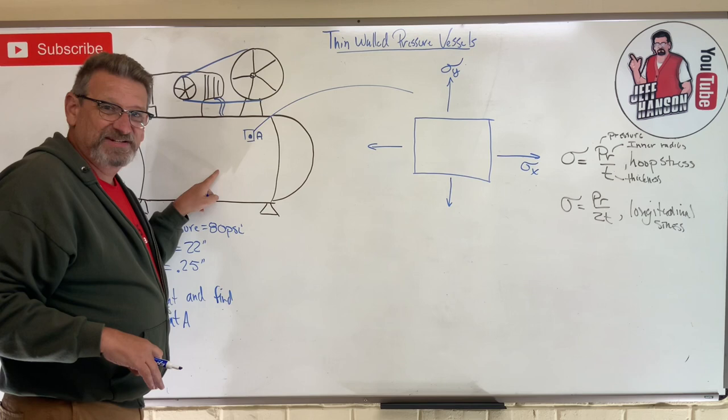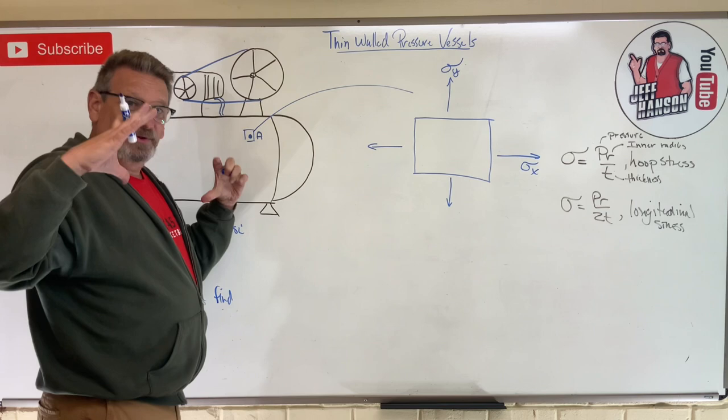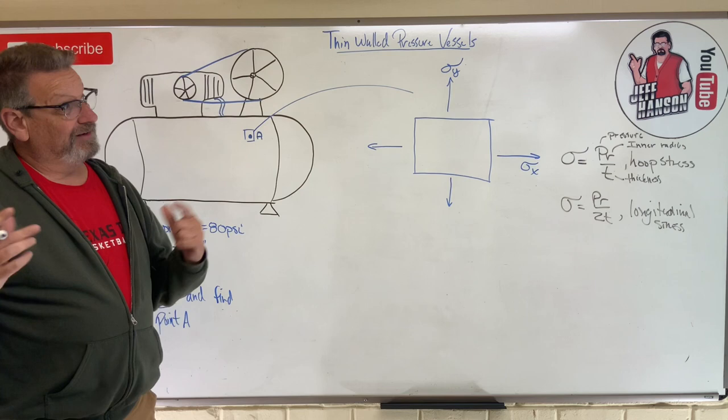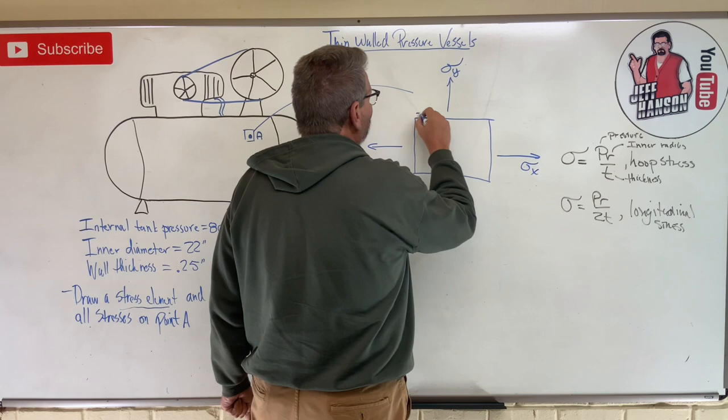What if this is a vacuum tank, maybe a vacuum cylinder? Well now the atmospheric pressure on the outside is bigger than the pressure on the inside, and you get an opposite effect. You actually get these arrows turn around and now it's being in compression instead of tension. So you can have tension or compression.